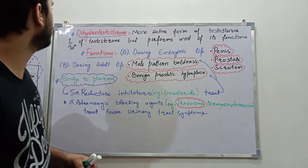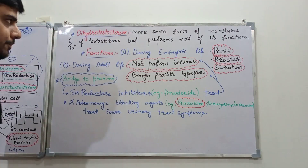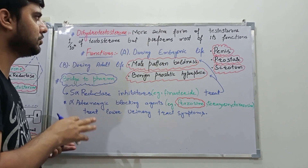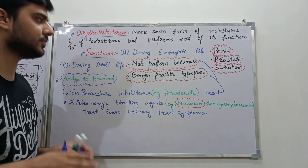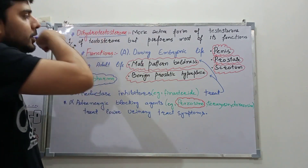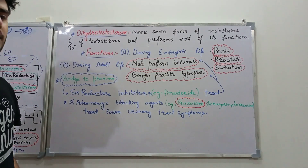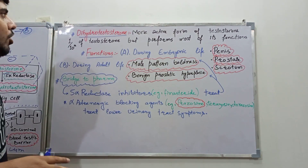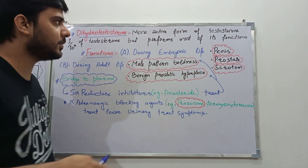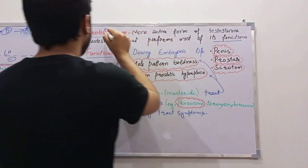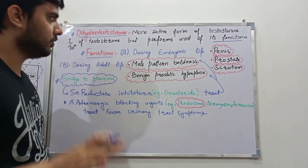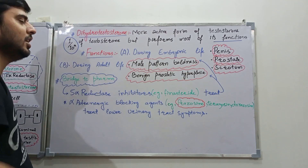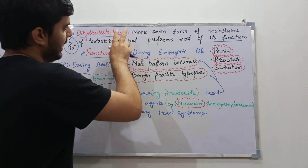Dihydrotestosterone is formed by converting testosterone in the presence of the enzyme 5-alpha reductase. This dihydrotestosterone is actually a more active form of testosterone. Only one-tenth of testosterone is present in the form of dihydrotestosterone, but most of the biological functions of testosterone are actually carried out by dihydrotestosterone.